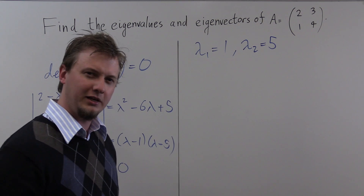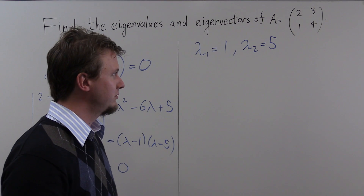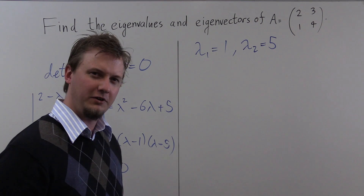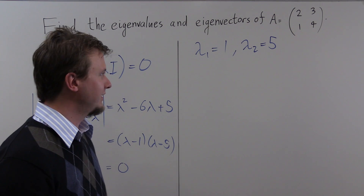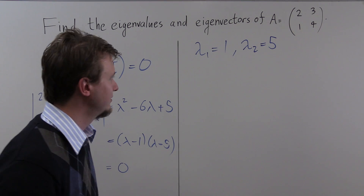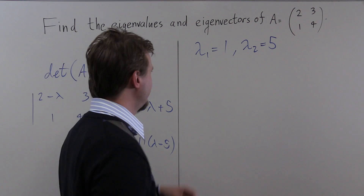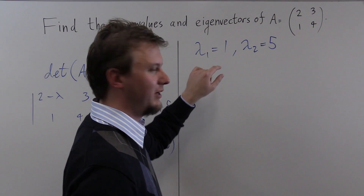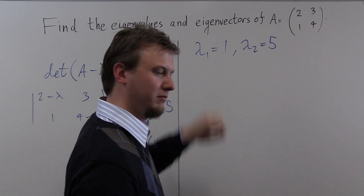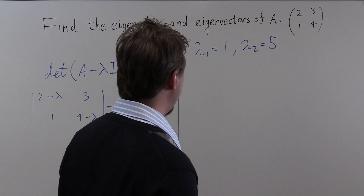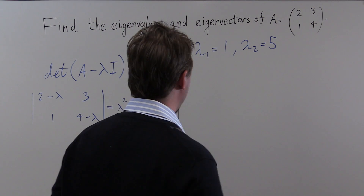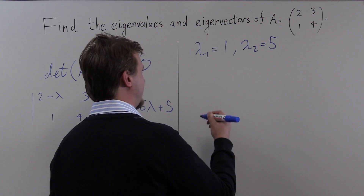So we've found our eigenvalues. Now let's find the corresponding eigenvectors. We'll start by finding the eigenvector for our first eigenvalue, lambda₁ equals 1.